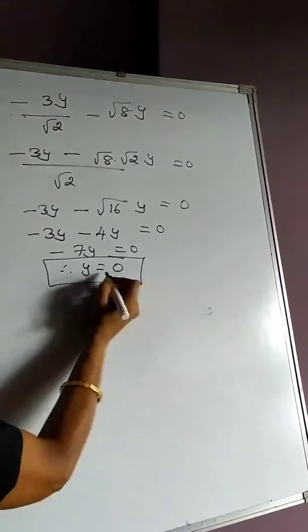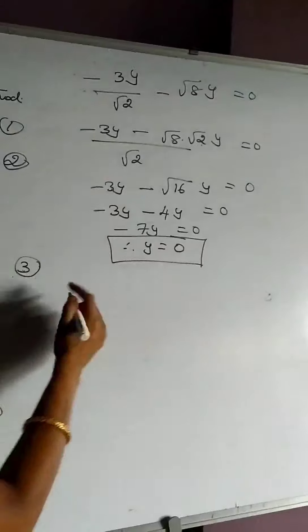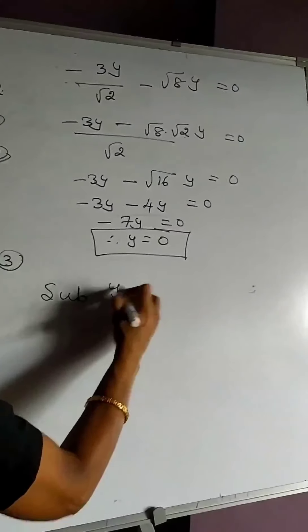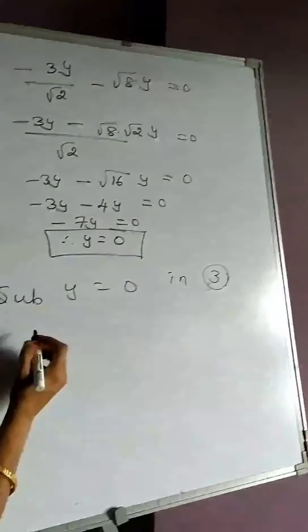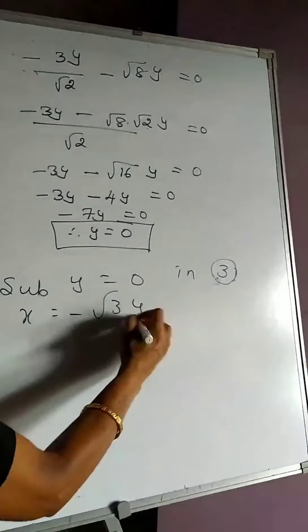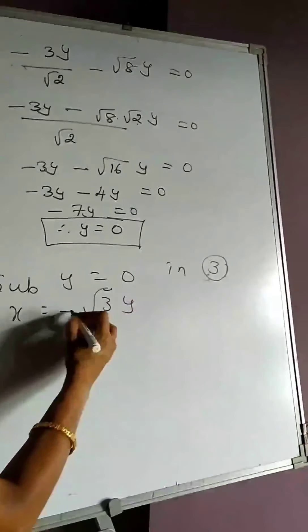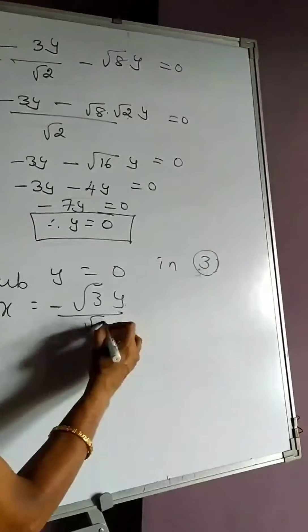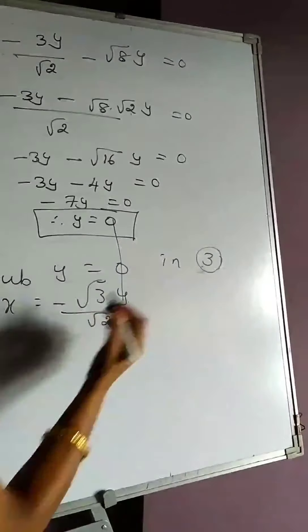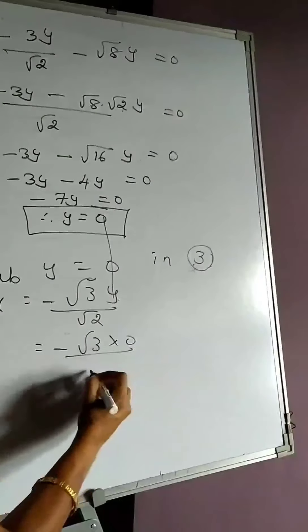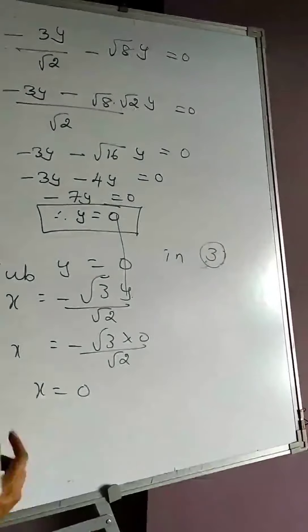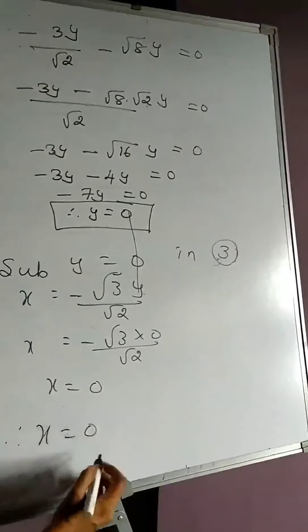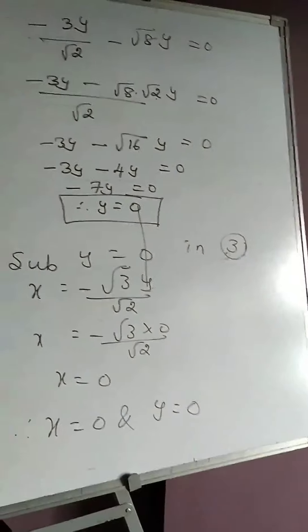We got the value of y = 0. Now substituting y = 0 in equation 3: x = −√3·y / √2 = −√3 × 0 / √2 = 0. Therefore we got x = 0 as well. The solution is x = 0 and y = 0.